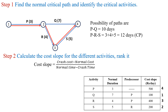The next minimum value is 200 for activity S, so rank 2 is given to activity S. Next is 400 for activity R, which gets rank 3. Finally, activity P gets rank 4.